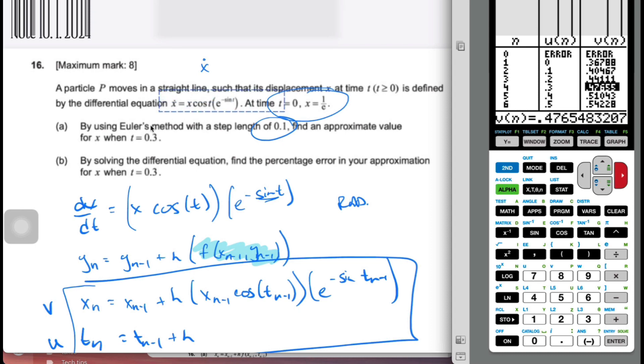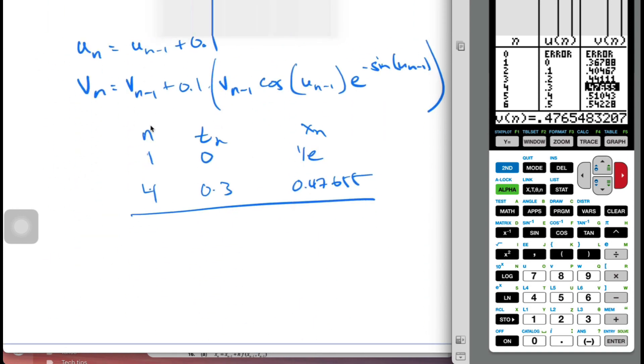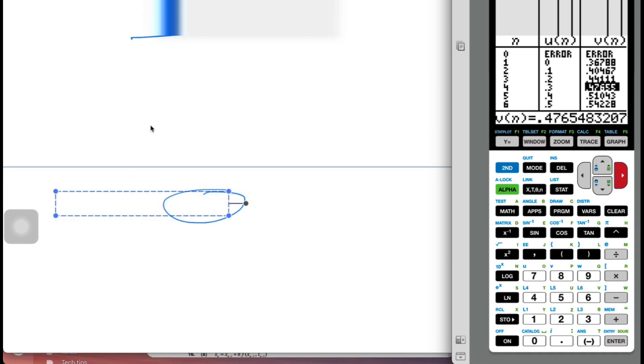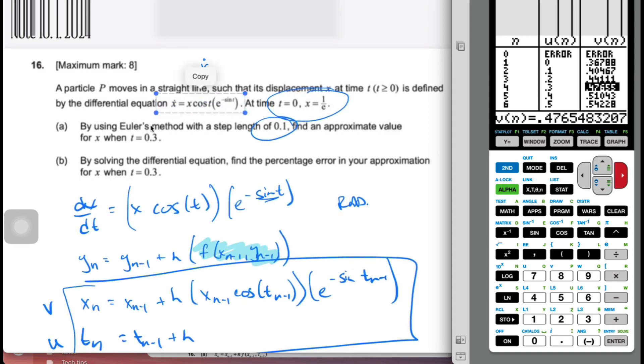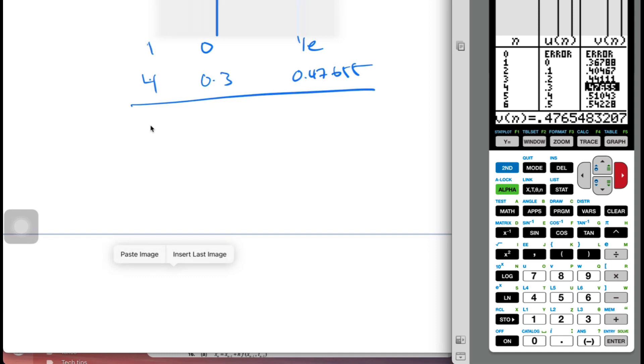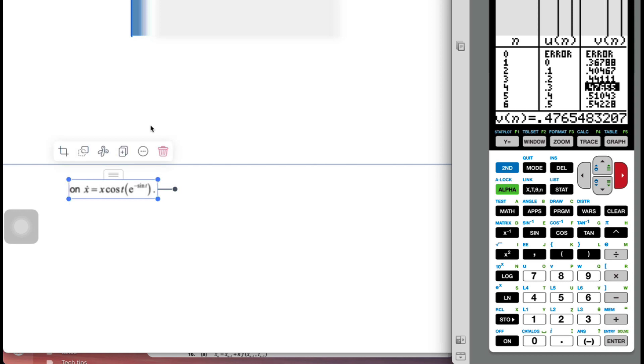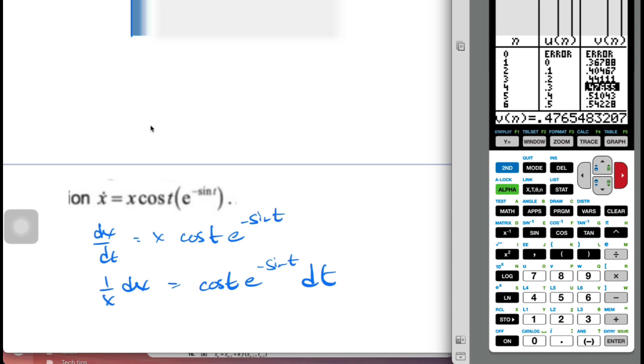Going to part b, if I take this information and I work on it. So I'm going to take this, recognizing this is dx/dt, which is x cosine t e to the minus sine t. I'm going to divide by x, so 1 over x dx equals, multiplied by dt, so cosine t e to the minus sine t dt, and I'm going to integrate both sides.